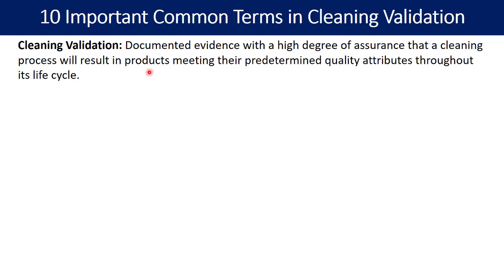You are going to create documented evidence to assure that whatever cleaning process you are going to use — maybe detergent cleaning followed by some organic solvent then finally a rinse with water — will meet the predetermined quality attributes. Predetermined quality attributes means understanding whether the carryover is below the acceptable limit or not.